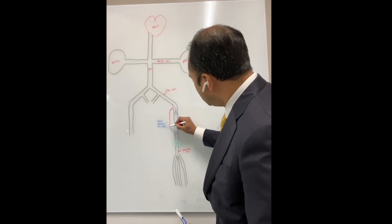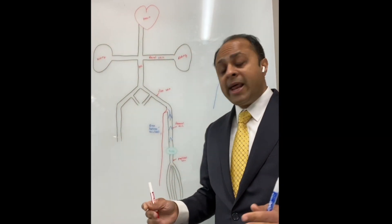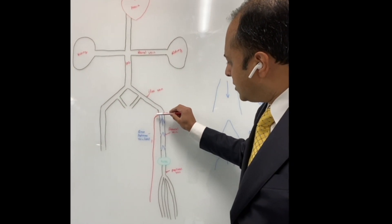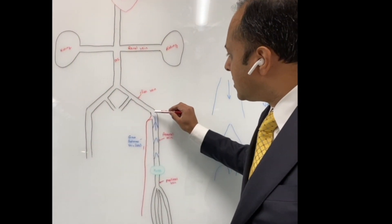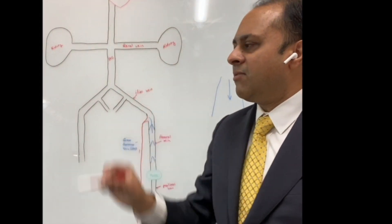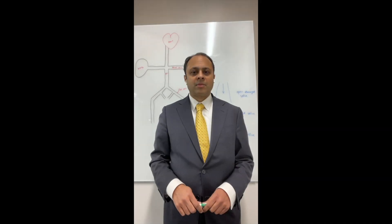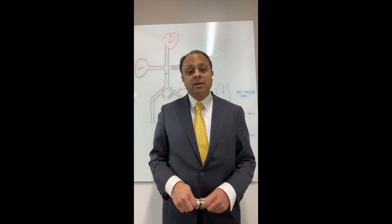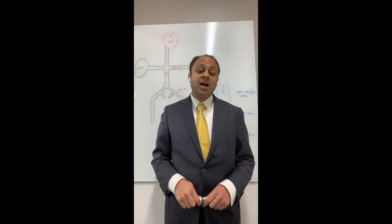So what happens is the blood comes up the femoral vein, tries to make the U-turn into the saphenous vein, and it can't because it's been welded shut. Instead, the blood goes up the iliac vein, up the vena cava, and back to the heart where it belongs. I hope this video has been educational for you in describing chronic venous insufficiency. Since this is my first video, I'd appreciate any comments or feedback that you can provide.